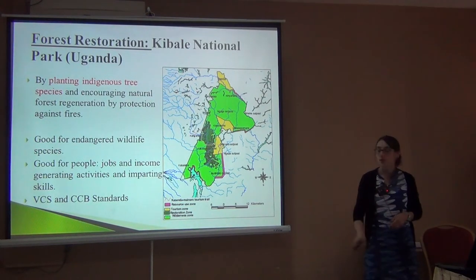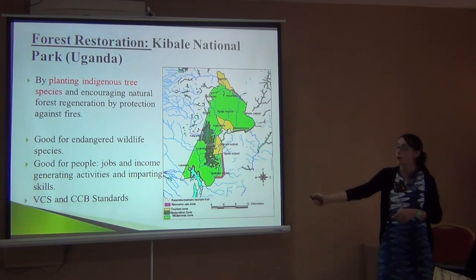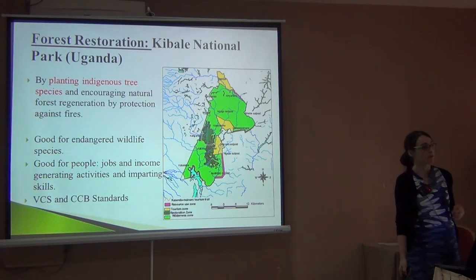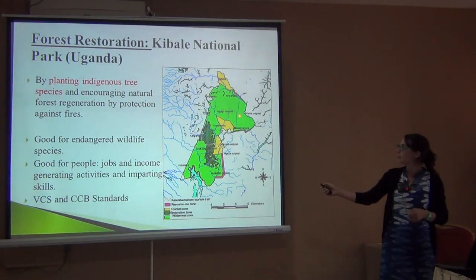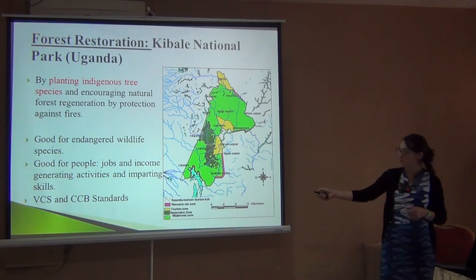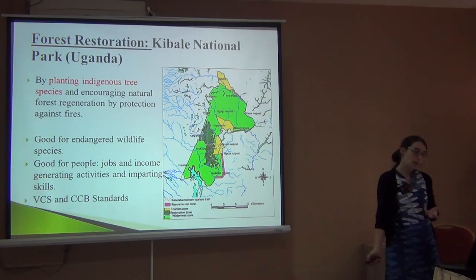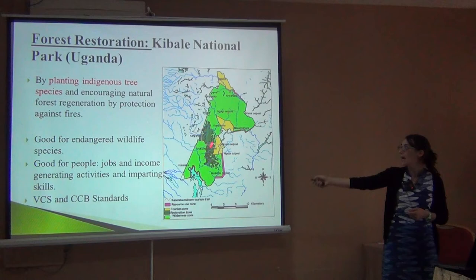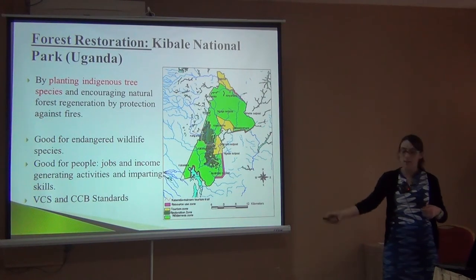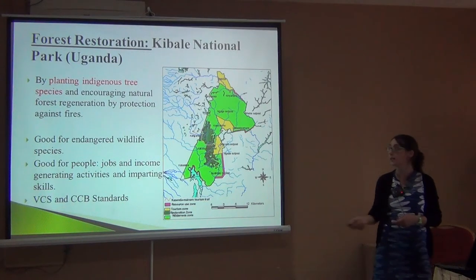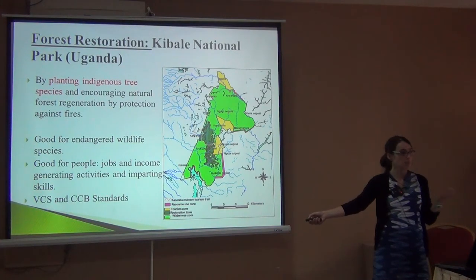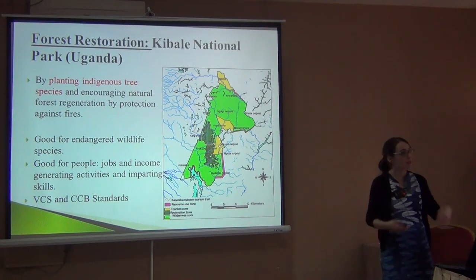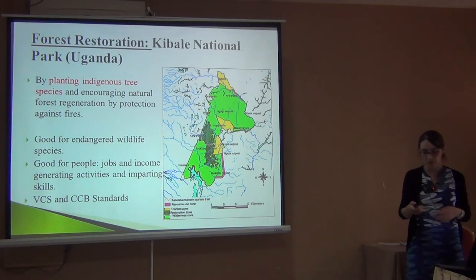Starting with Kibale — the yellow patches are where tourists go, mostly to see chimpanzees but also for other wildlife. The green areas indicate fewer animals, and the dark green, which is the project area, is degraded land. They thought if they restore this land, animals could move between areas, and by planting trees they give jobs to people while helping endangered chimpanzees. They tried to get certified VCS and CCB — the one that gives a little extra money for helping the local community and for helping biodiversity.